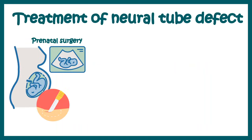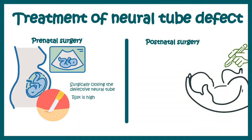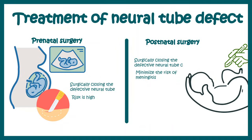Regarding treatment options, there could be prenatal surgery, but it carries very high risk. There could also be postnatal surgery — performed after the baby is born — where the opening in the back is surgically closed and the defective neural tube is taken back inside. This reduces the risk of meningitis and other bacterial infections, but it cannot heal the underlying defect. There is no absolute cure for these defects, but supportive treatments can improve the situation and increase life expectancy.